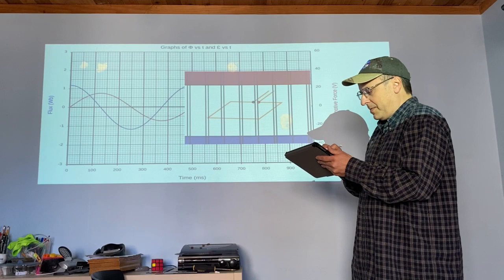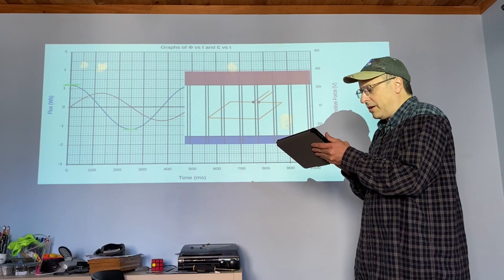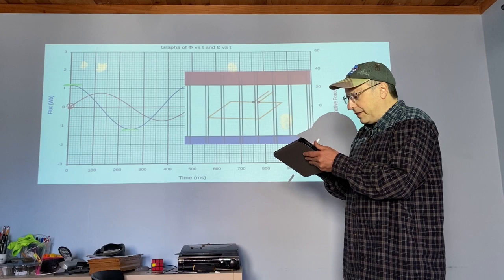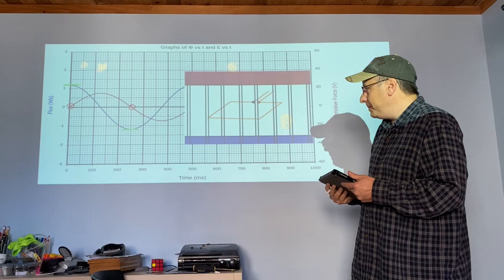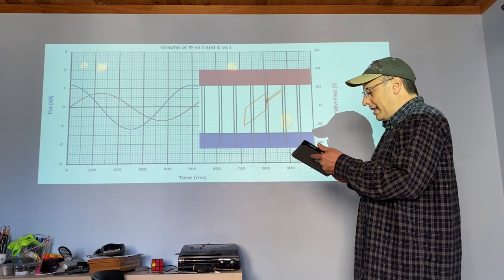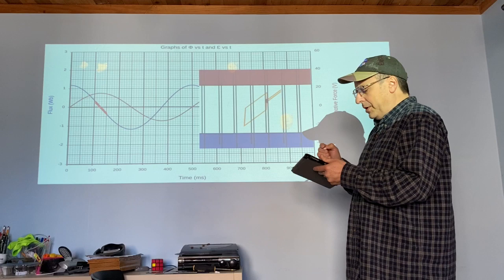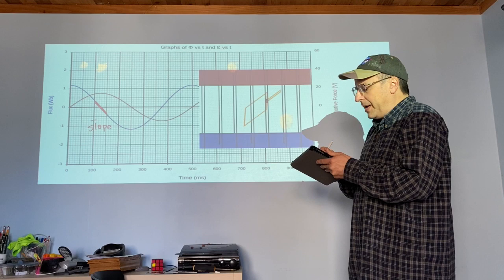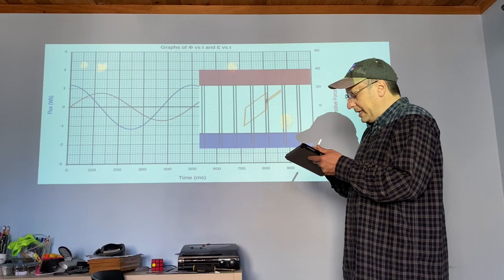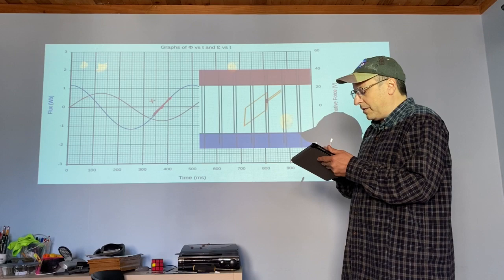You want to look at the slope of the line for the flux. Here the flux graph has a horizontal slope, meaning the flux is momentarily stationary — momentarily not changing — and at those moments the voltage is zero. Then at the spot where our flux is zero, the slope happens to be at its maximum steepness, but it's a negative slope, and a negative slope gives us a positive voltage. Then further along, we have our steepest positive slope, and our voltage is negative.